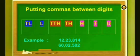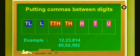Now, let's see this example: 12,23,814 and 60,02,502. Here, I have put a comma after the lakhs place and after the thousands place.